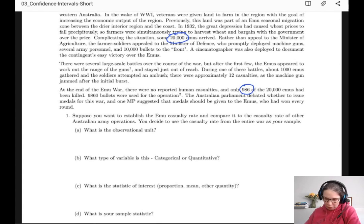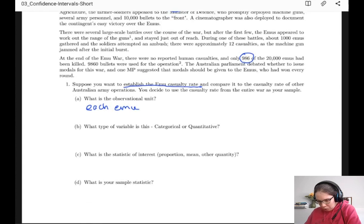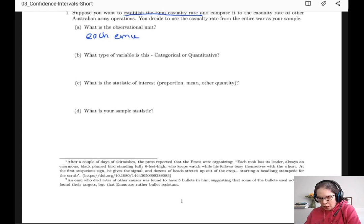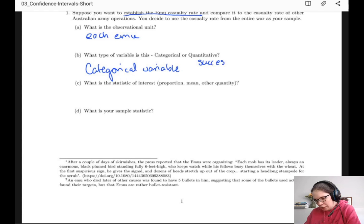In this case, we're asked to establish the emu casualty rate, which means that we're going to be looking at each emu as the observational unit. And this is a categorical variable, where success equals dead emu and failure equals live emu. So our statistic of interest, because we have a categorical variable, is a proportion.